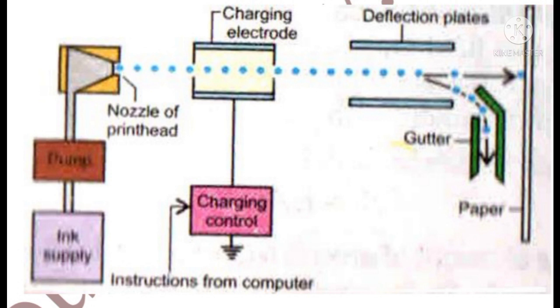The charging electrodes charge the ink droplets that are not needed on the paper. The charged ink droplets are deflected into the gutter by the deflecting plates. The uncharged ink droplets pass through the deflecting plates and strike the paper.